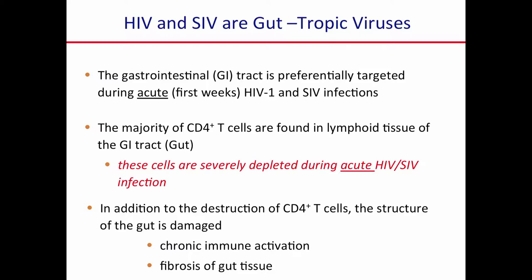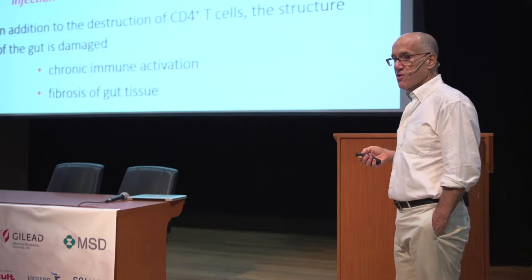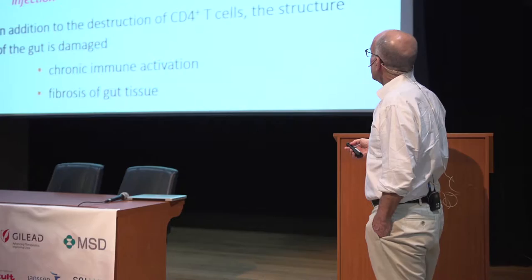As I'm sure most of you know, HIV and SIV are what we refer to as gut-tropic viruses — that means they like to replicate in the gut. The GI tract is preferentially targeted during the first weeks of both HIV and SIV infections. This is true no matter how you're infected, whether it's vaginally or through IV drug use — really the first place you find very high levels of virus is in your gut tissue, in your GI tract.